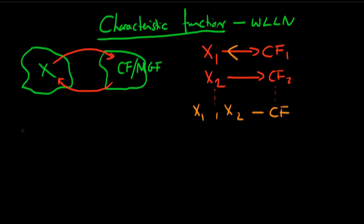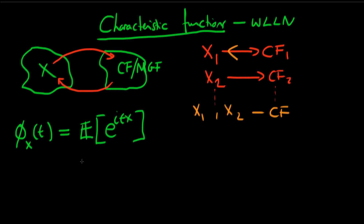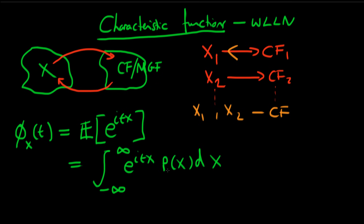So what does it actually mean to find the characteristic function? The characteristic function of random variable X is defined in terms of some parameter t, and it equals the expectation of e^{itx}. Using the law of the unconscious statistician, that means we integrate from minus infinity to plus infinity of e^{itx} times our probability density. In general this isn't necessarily easy, because it's a complex integral that in principle requires some complex analysis.